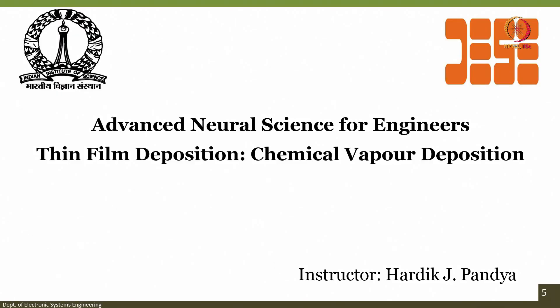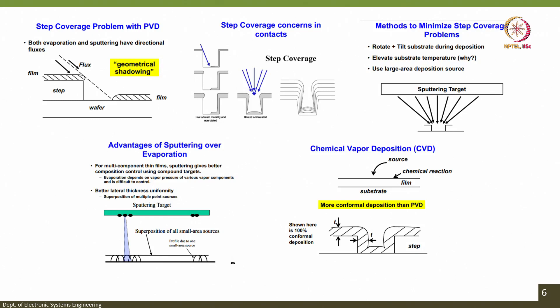This is a thin film deposition technique. The problem with physical vapor deposition, as we have discussed, is that the step coverage is poor, because when you deposit the film using e-beam evaporation or thermal evaporation, there is a geometrical shadowing effect. Both evaporation and sputtering have directional fluxes, so when it comes to step coverage, the contacts are not great.